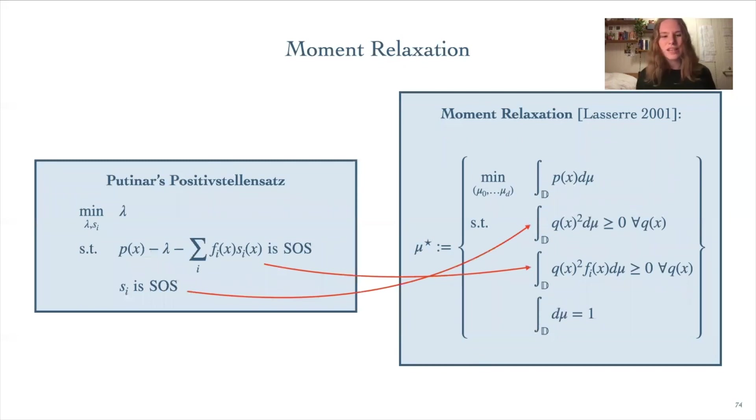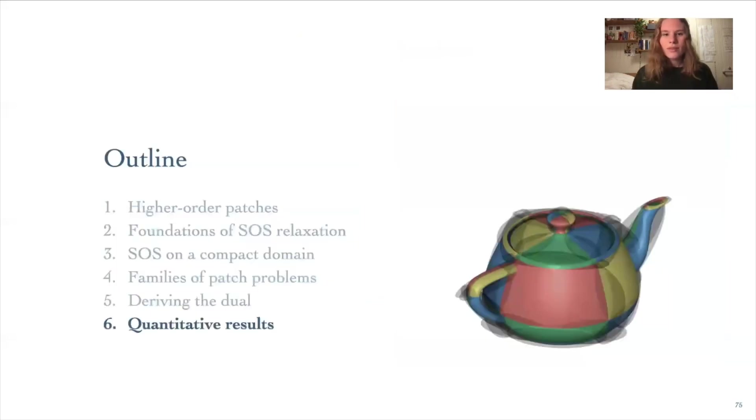Looking at the moment relaxation, you might notice that it looks very similar to the Positivstellensatz relaxation. In fact, it turns out that these two problems are duals to each other. I won't actually prove this right now, though. There's a lot of theory about duality and optimization problems, but here I'll just say that it's really nice for us because it means that we can write our primal problem in the easy-to-understand and implement Positivstellensatz form and then for free get the solution to the moment relaxation, since it's the dual of that problem. I mentioned at the beginning that the solution to the moment relaxation is a delta function supported at the minimum of our polynomial. So that means we can retrieve the location of this minimum essentially for free from the dual once we've solved the primal problem.